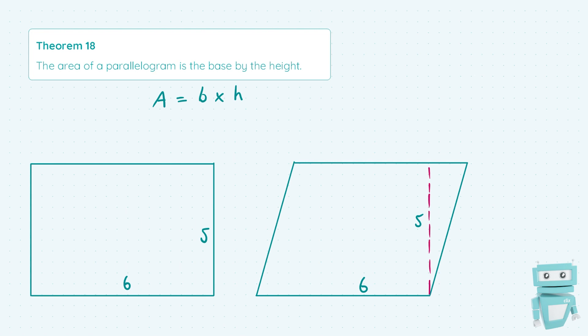All rectangles and squares are parallelograms, but not every parallelogram has 90 degrees in every angle. In the case of our rectangle here, the base by the height is the same as the length by the width, which means our area is 6 by 5, which is 30.